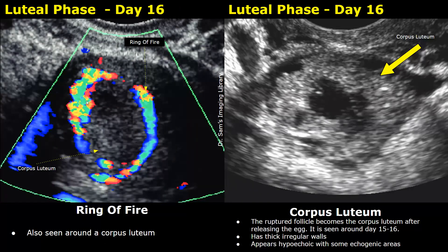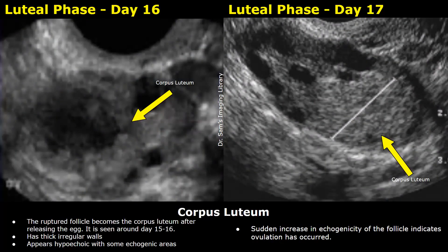On color Doppler ultrasound, the corpus luteum also shows a ring of fire peripheral vascularity. The corpus luteum, which appears as a structure with irregular thick echogenic walls, will show increased vascularity at its periphery. This is another image showing the corpus luteum on day sixteen. The image on the right is taken on day seventeen. The corpus luteum can also appear completely echogenic — this sudden increase in echogenicity of the dominant follicle indicates that ovulation has occurred.